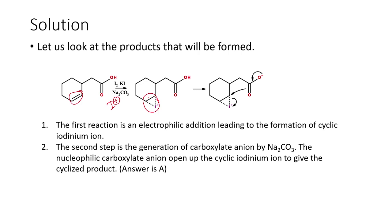Once the electrophilic reaction happens, the next step involves Na₂CO₃ — a base — which abstracts the most acidic proton. This carboxylic acid proton is the most acidic, so sodium carbonate abstracts it and we end up with the carboxylate anion. On charge reversal, this carboxylate anion attacks the cyclic iodonium ion — the negative charge on oxygen attacks the carbon-oxygen bond.